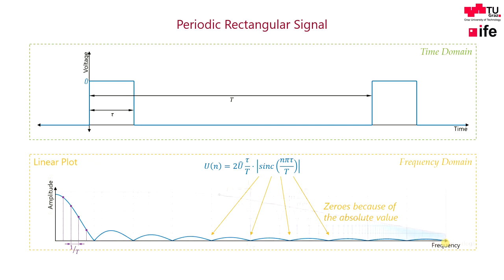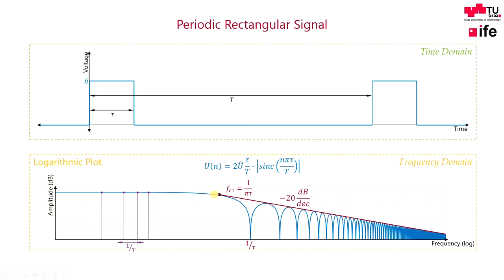More interesting is probably the logarithmic plot of the frequency domain, where we can see a minus 20 decibels decrease of magnitude after the first corner frequency. The value of this corner frequency moves to lower frequencies the longer the on-time of the rectangular input is. Alternatively spoken, the shorter a pulse is, the more spectral components can be measured at higher frequencies.